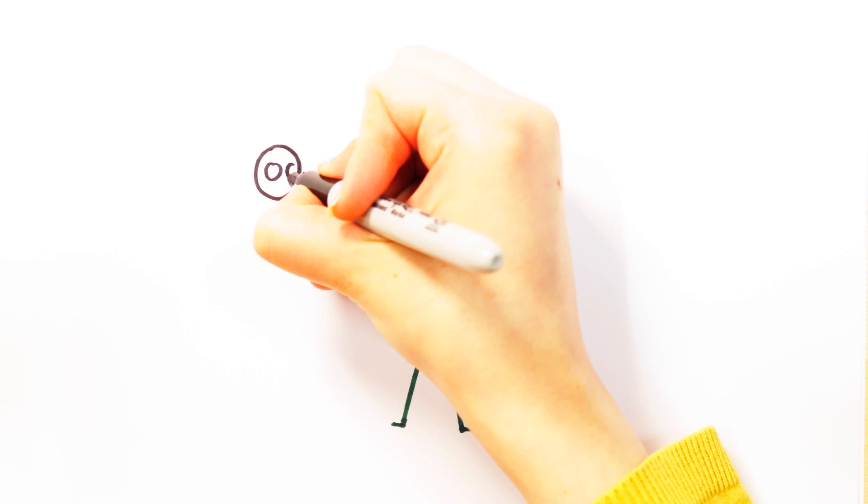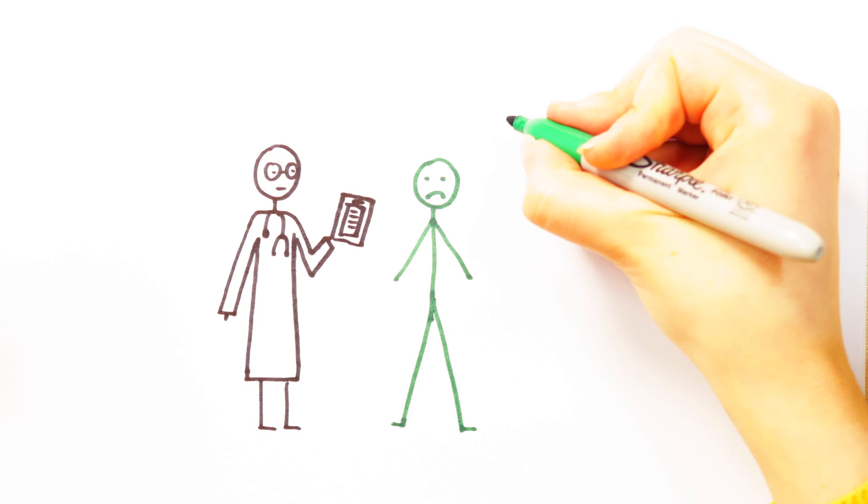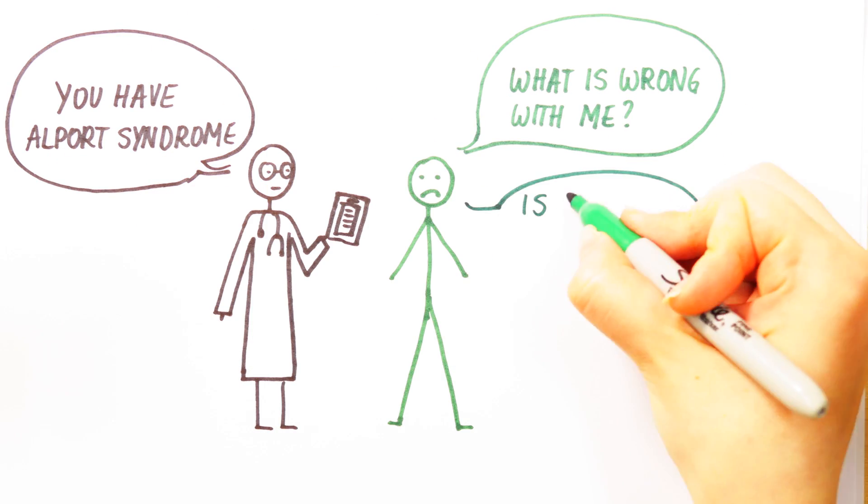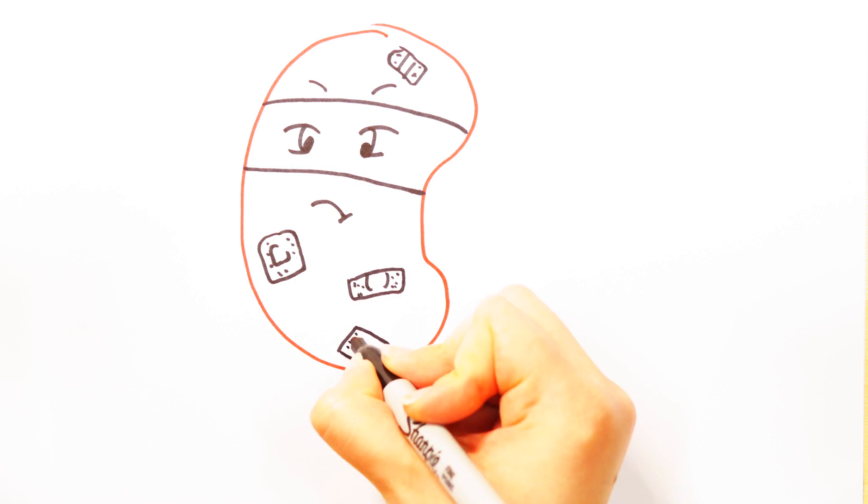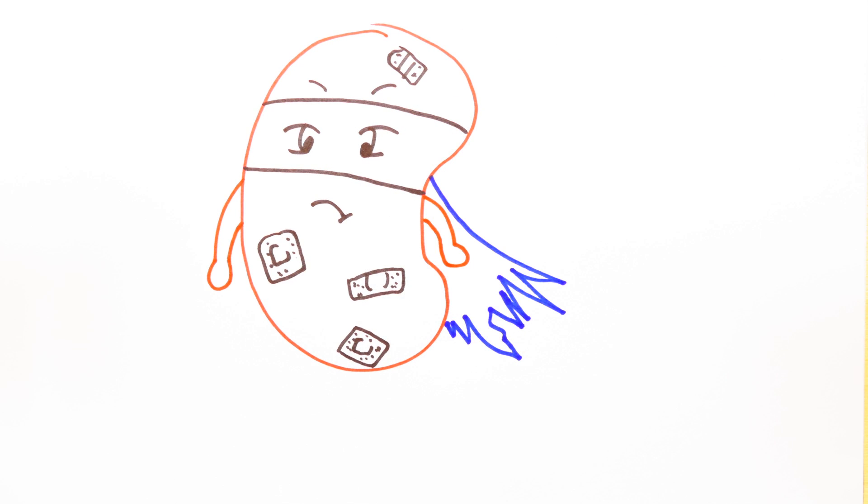Today, it is possible to perform a genetic test to diagnose Alport syndrome, but despite being able to confirm the diagnosis, a cure is not yet available. Hearing loss is a major problem, and in the most severe cases, the kidneys completely shut down, which means dialysis or a kidney transplant are needed.